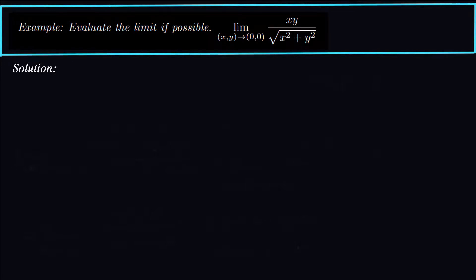Hey guys, what's up? Today we're looking at finding the limit of a multivariable function. The function is xy over the square root of x squared plus y squared, and we want to find the limit as x and y both go to zero.